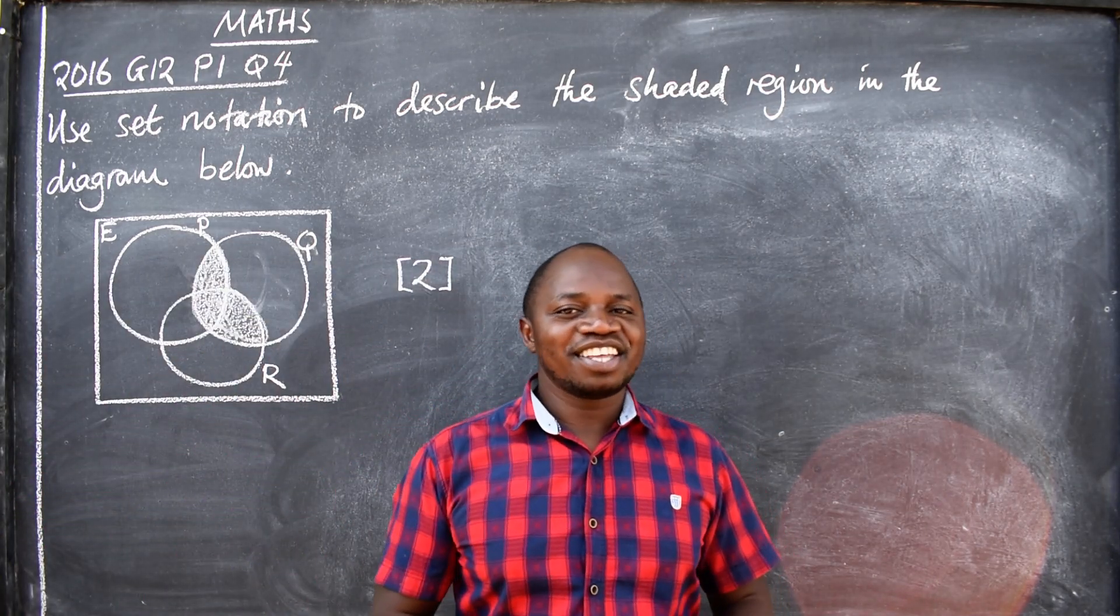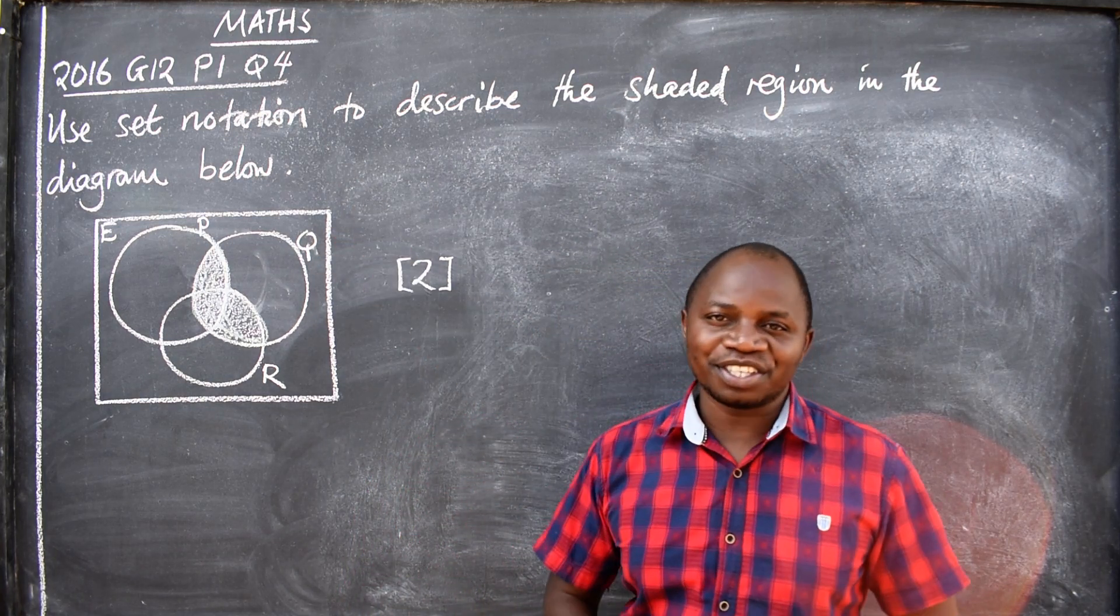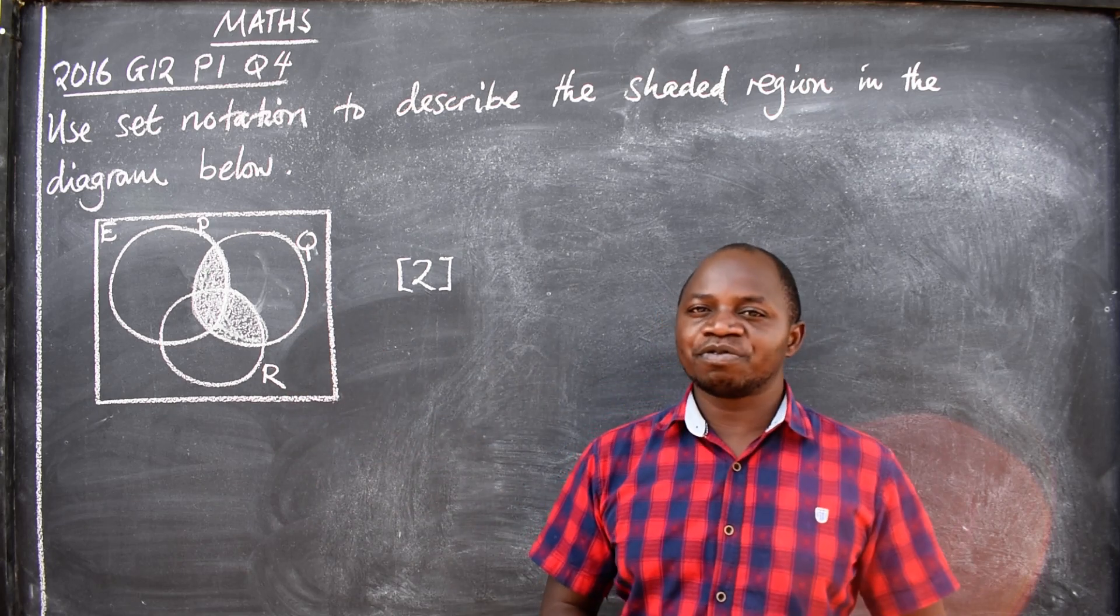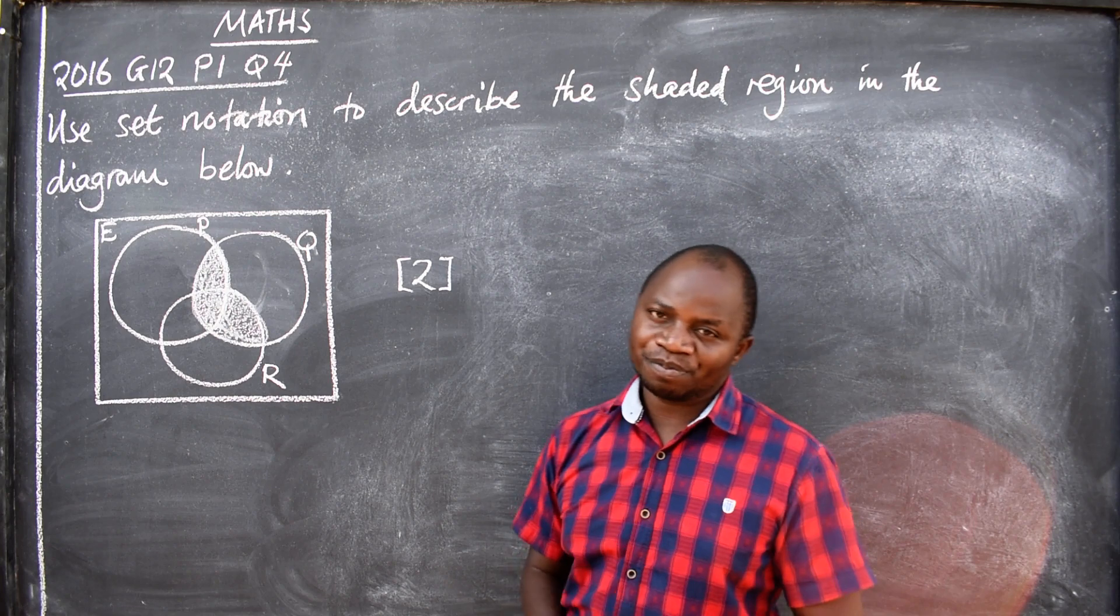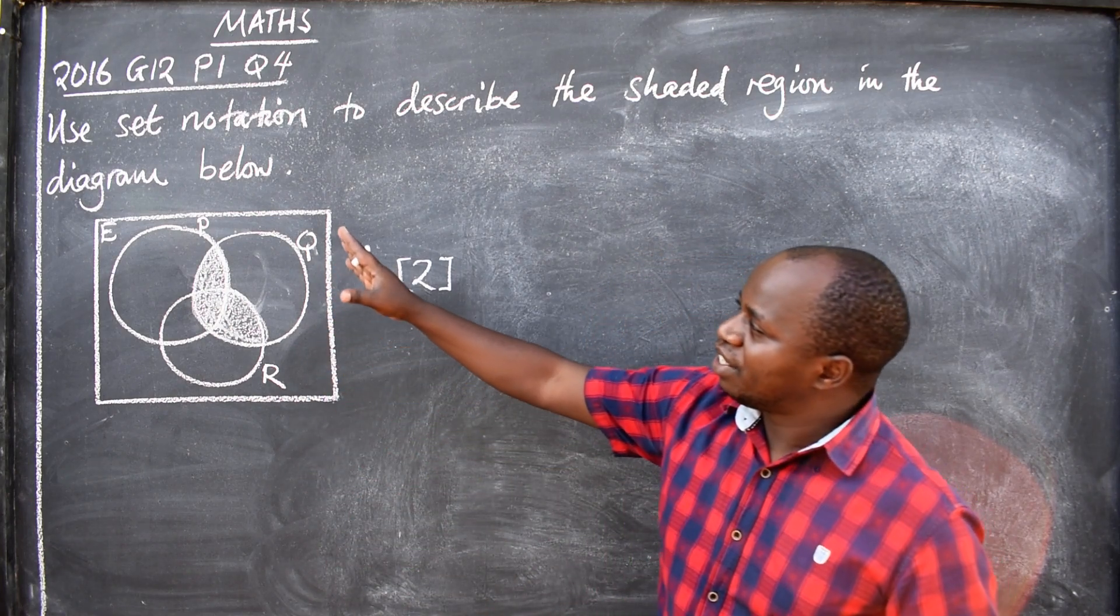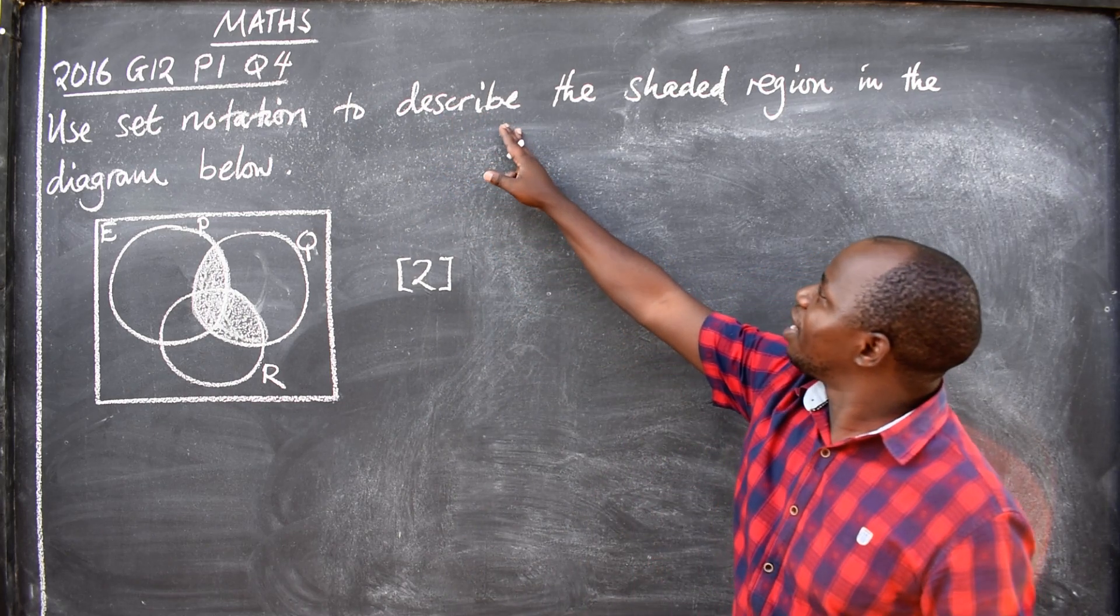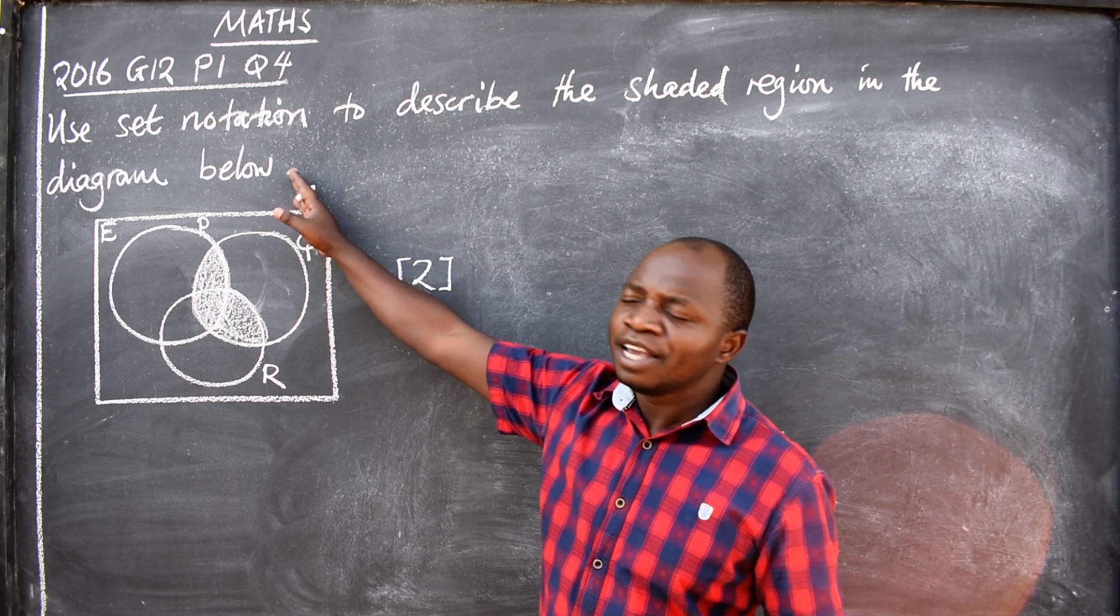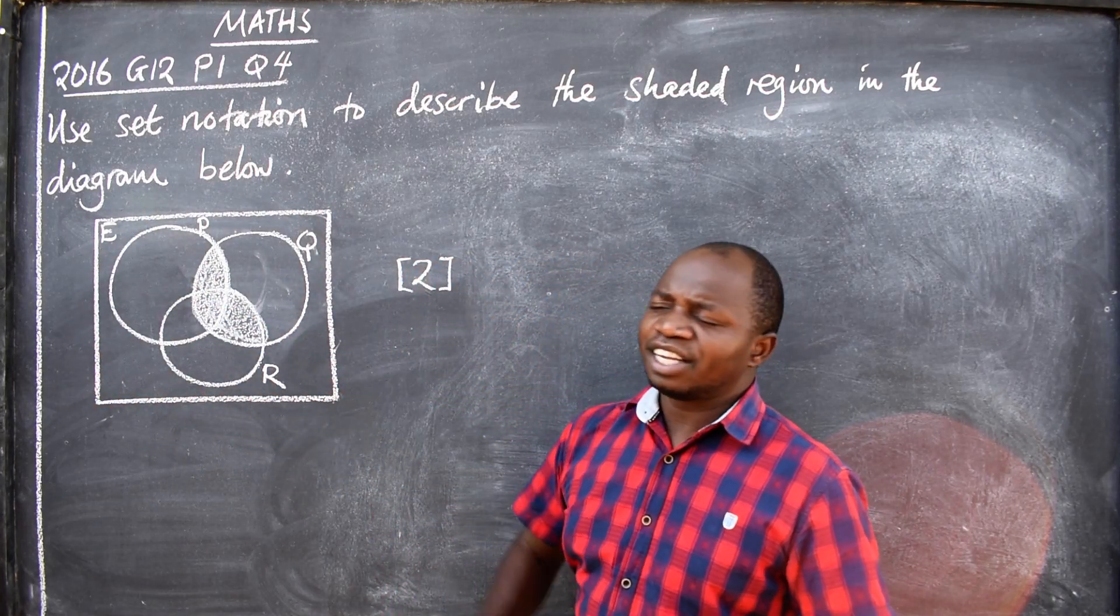Hello dear friends, in this video we are going to look at this question we are seeing on the board, coming from 2016 grade 12 paper 1, question number 4. The question reads: use set notation to describe the shaded region in the diagram below.